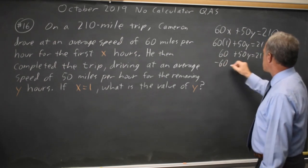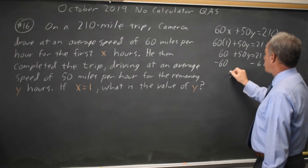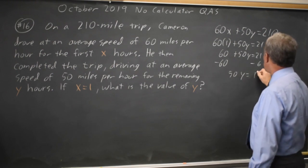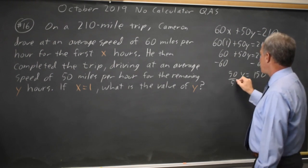Subtract 60 from both sides and you get 50Y equals 150. Divide by 50.